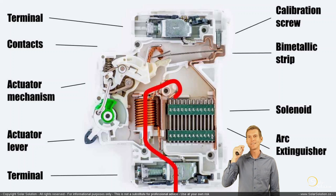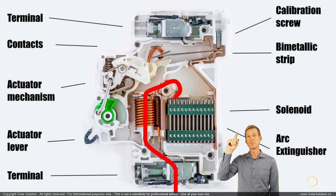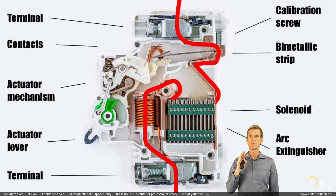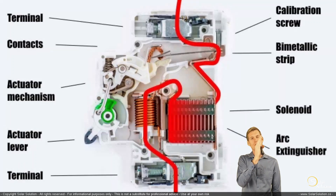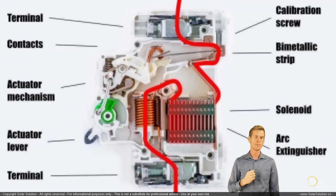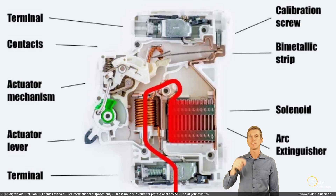Once the contacts open, the current has nowhere to go and must travel through the arc extinguisher to reach the top terminal. As the current tries to pass through the arc extinguisher, it makes very small arcs jumping from one plate to the next. These arcs lose energy as electrical energy is converted to heat and dissipated. Slowly the arc extinguishes, the current can no longer flow, and the circuit is safely interrupted.